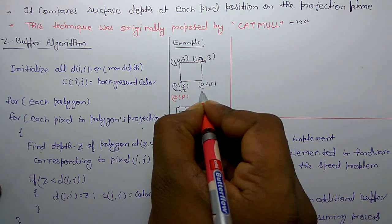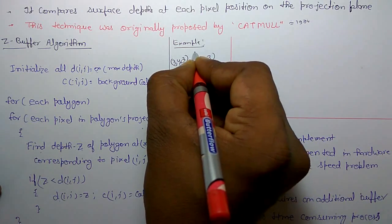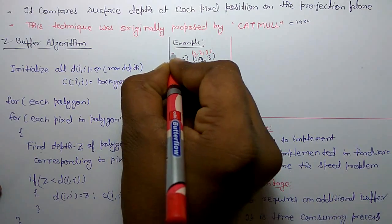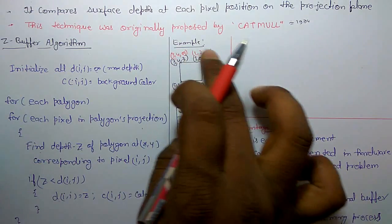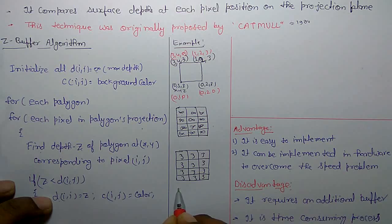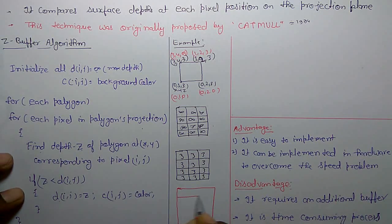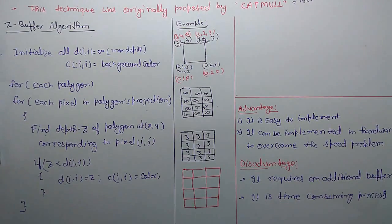For coordinates 0,1,0 and 0,2,0, the depth values are 1,2,3 and 3,4,3. If we have a new depth value, then the pixel color or Z value will be different, and we can observe the difference in the updated buffer.